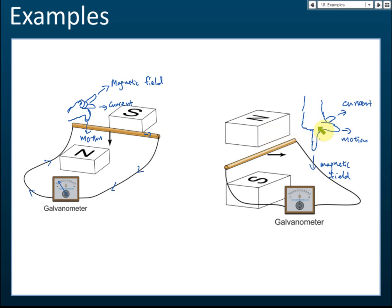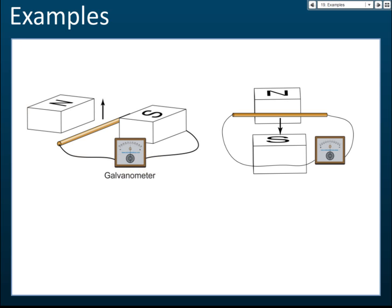For the second case: the field is from north to south, and the motion — shown by the thumb — is to the right. Therefore the current goes inside the plane and then upward. The current is denoted by the symbol I. For the galvanometer deflection in this case, it will deflect to the left.